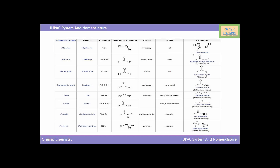The organic compound methanol has the functional group hydroxyl, that is the R-OH group. It has the prefix hydroxy and suffix -ol. For methyl ethyl ketone, carbonyl is the functional group, prefix is keto or oxo, and suffix is -one. For acetaldehyde, CHO is the functional group, prefix is aldo, and suffix is -al.